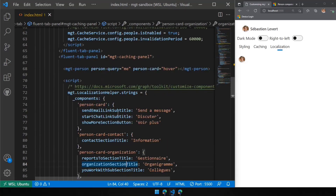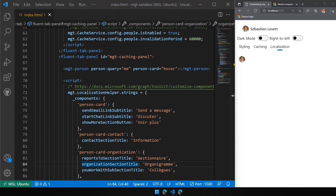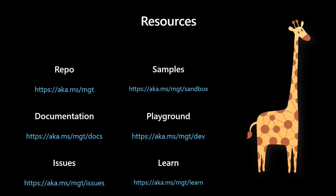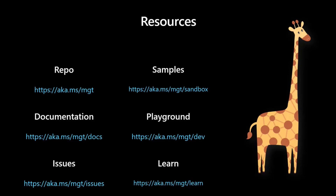Those are some of the customization opportunities in the toolkit — really going deeper to make them your own inside your app. Resources: the repo at aka.ms/MGT, the docs, issues, and to see the live code used today go to aka.ms/MGT/sandbox. Next week we'll start talking about leveraging the toolkit in Teams, React, SharePoint Framework, and other areas. Thanks so much for the opportunity.